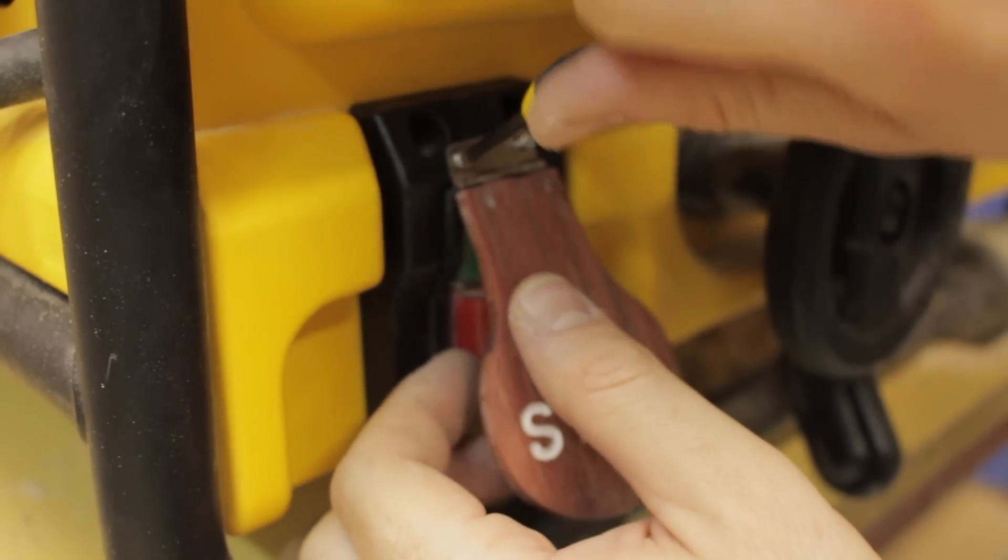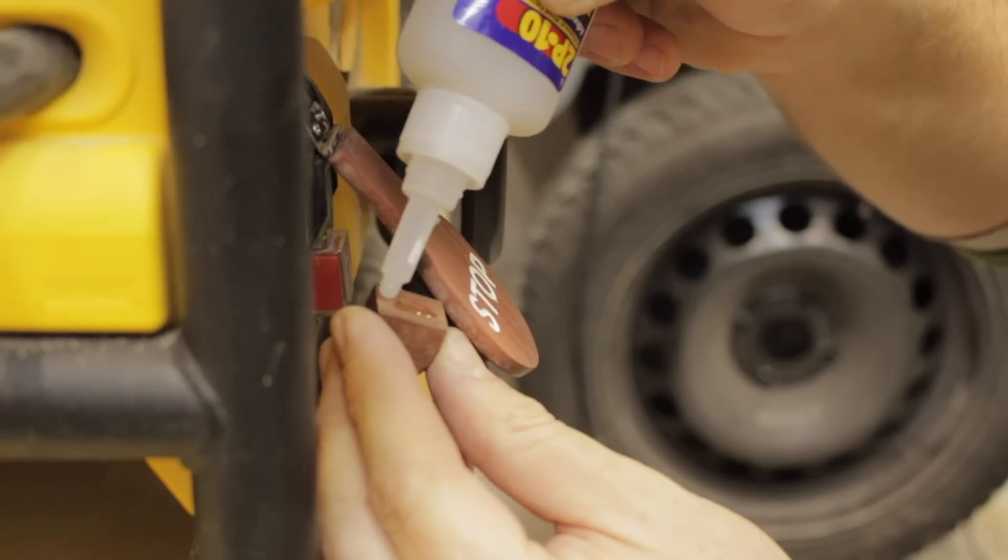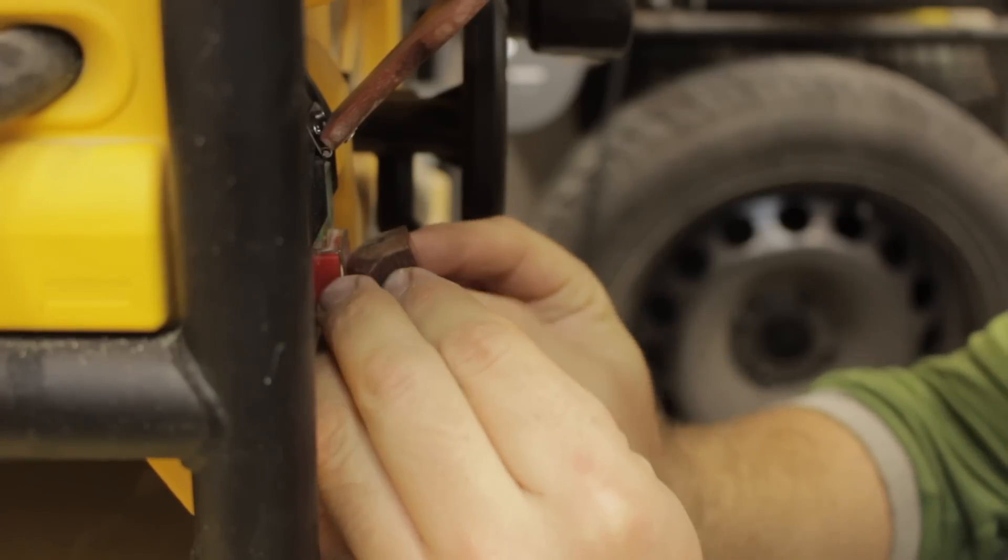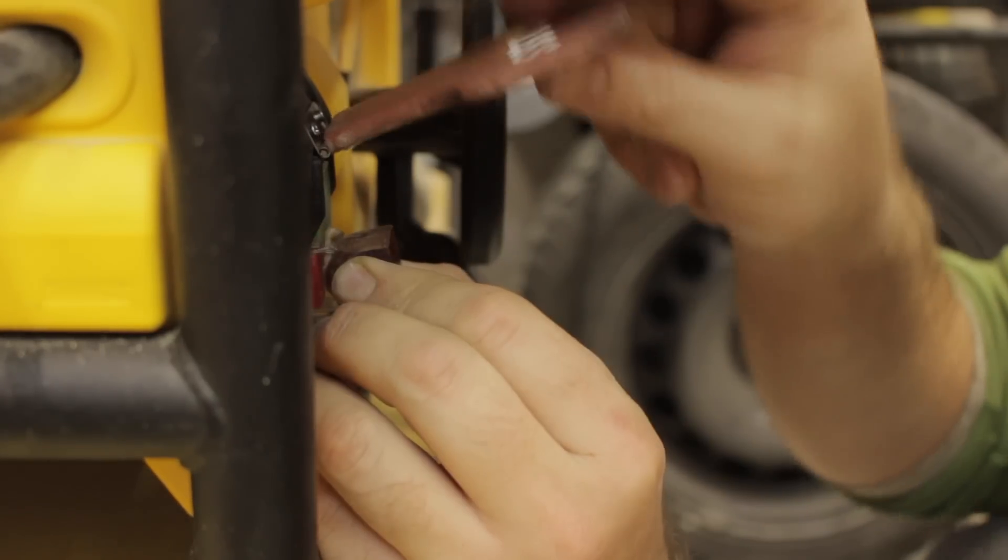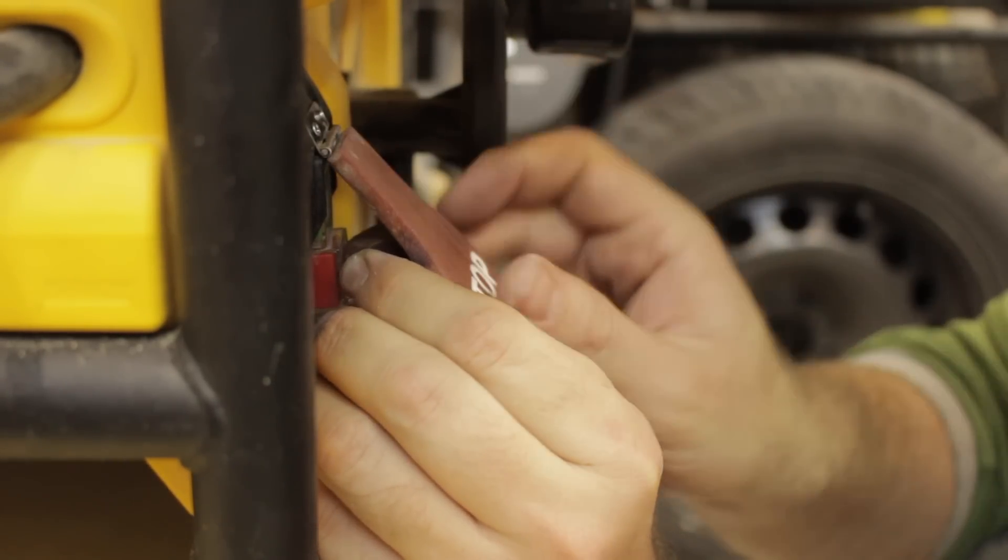I screwed the tab back to the saw and then I glued the little finger piece that goes to the tab so it could turn off the saw. This is how I aligned it, that was the easiest way to do it.